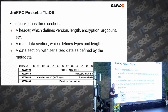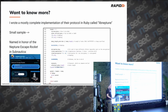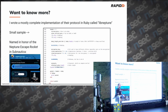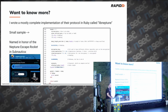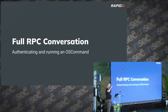I did an open source implementation of all this, called LibNeptune — a Ruby library that's also integrated in Metasploit. So if you ever want to write something for Metasploit involving Rocket UniData, you can. LibNeptune is named after the Neptune escape rocket from Subnautica.